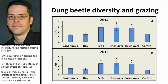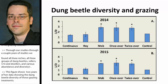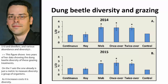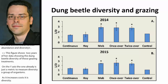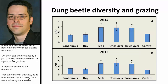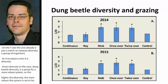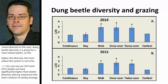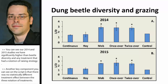This figure shows two years of data on dung beetle diversity across grazing treatments. The y-axis uses the 1/D metric to measure diversity — as it increases, so does diversity. Dung beetle diversity is generally seen as a proxy for a more robust system. In both our 2014 and 2015 studies, we had significantly higher dung beetle diversity in any treatment that had a rotational grazing strategy. There was no statistically significant difference among the three rotational treatments. In Nebraska, twice-over rotational grazing is common, so our producers may already have the best management strategy in place for dung beetle diversity.